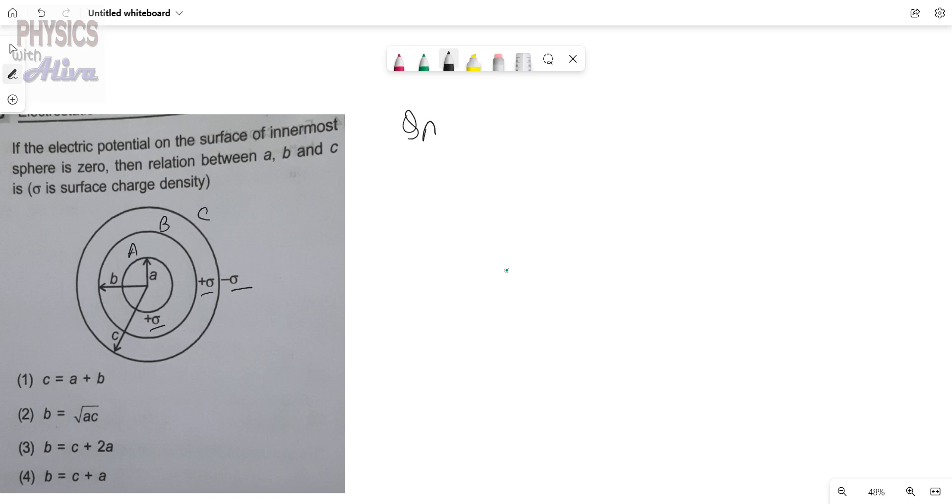For the sphere A, the total charge is sigma into 4πA². This is the surface area of the sphere A. And the total charge B is sigma into 4πB². This is the surface area of the sphere B.